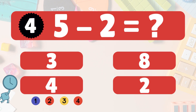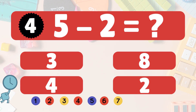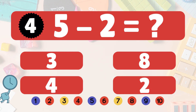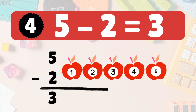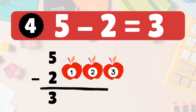You're doing awesome! Next, 5 minus 2 equals what? 5 minus 2 is 3. Here we have 5 apples. Take 2 away — 3 apples left: 1, 2, 3. So 5 minus 2 is 3.